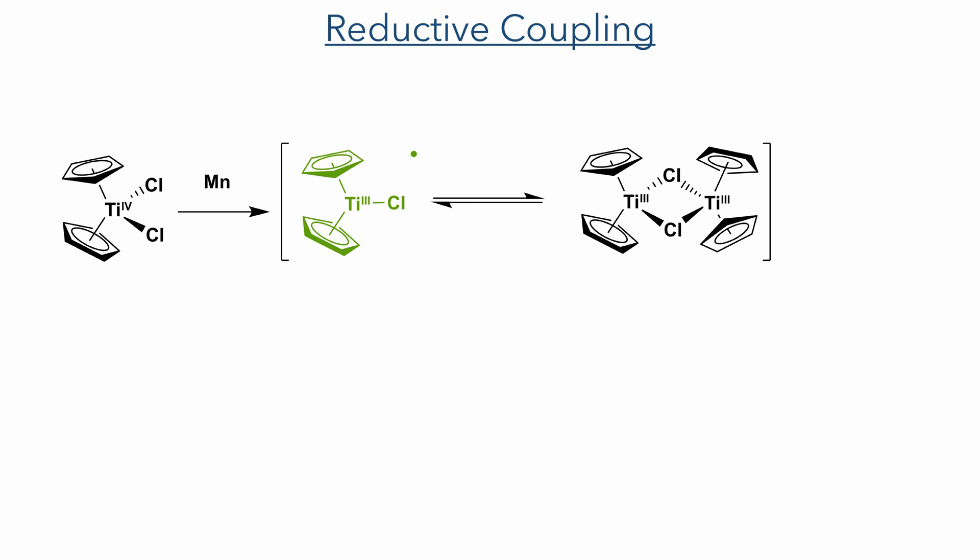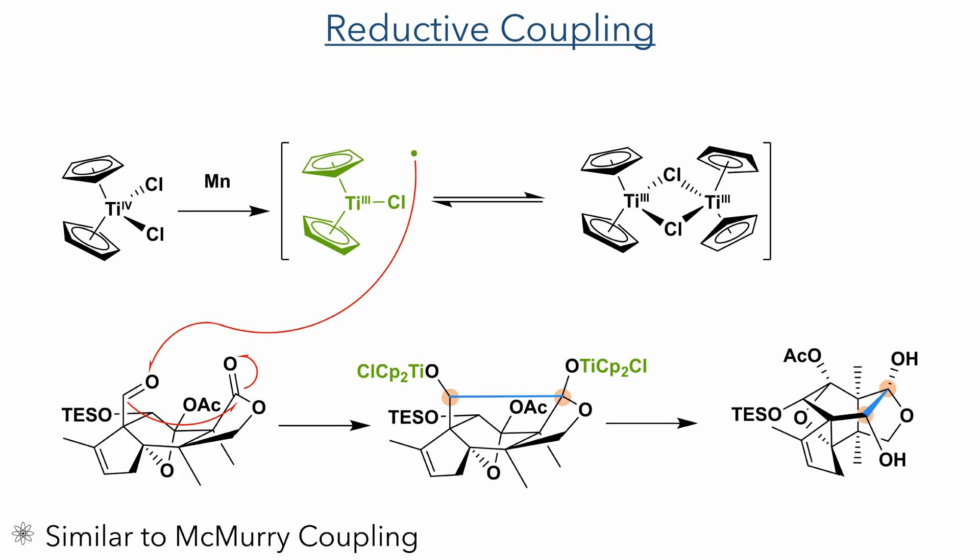The next step was a reductive coupling promoted by titanocene dichloride. This was reduced using metallic manganese to produce the Ti(III) compound, which underwent radical addition to the aldehyde and promoted a radical carbon-carbon coupling between the carbonyl of the aldehyde group and the carbonyl of the ester group, producing upon workup a 1,2-diol in addition to the carbon-carbon bond. This reaction is somewhat analogous to the more common McMurray coupling, which occurs between two ketones.